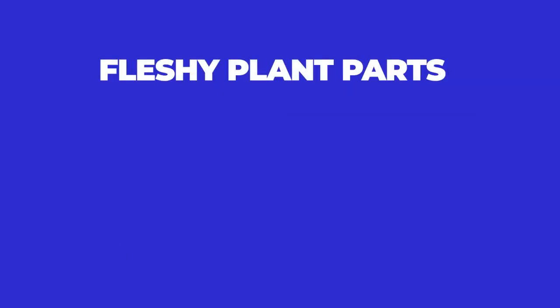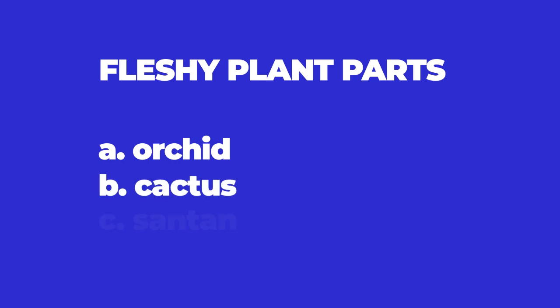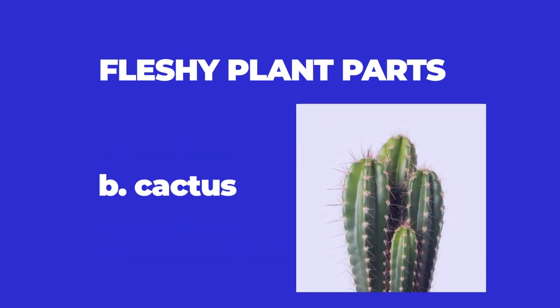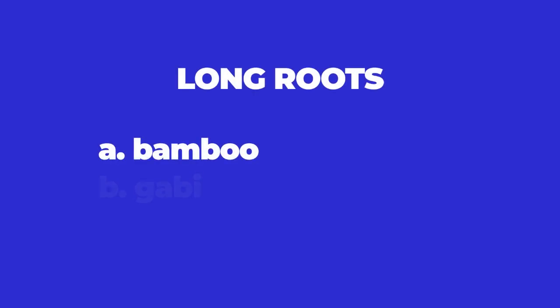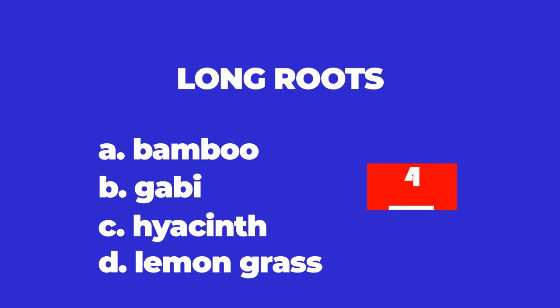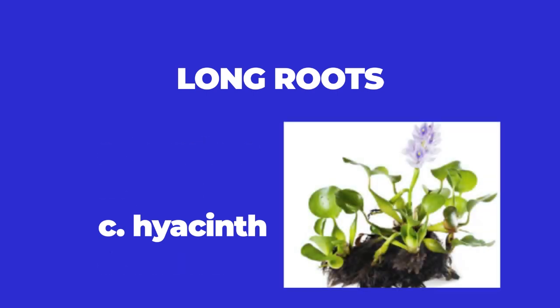Number 4: Fleshy plant parts. A. Orchid. B. Cactus. C. Santan. D. Yellow bell. The answer is B — cactus is a fleshy plant. Number 5: Long roots. A. Bamboo. B. Gabi. C. Hyacinth. D. Lemongrass. The answer is C — yes, it is C, hyacinth.